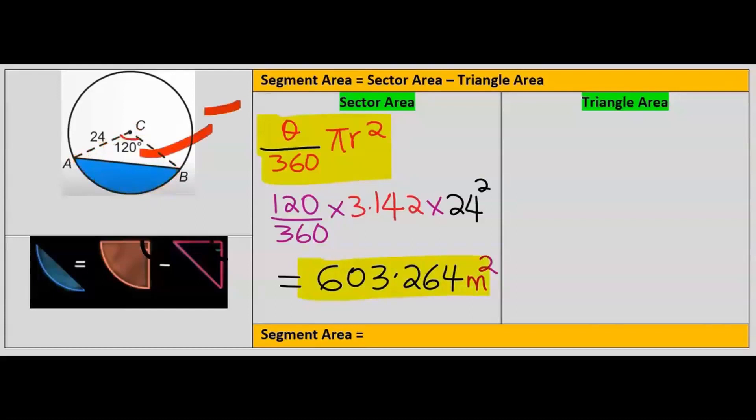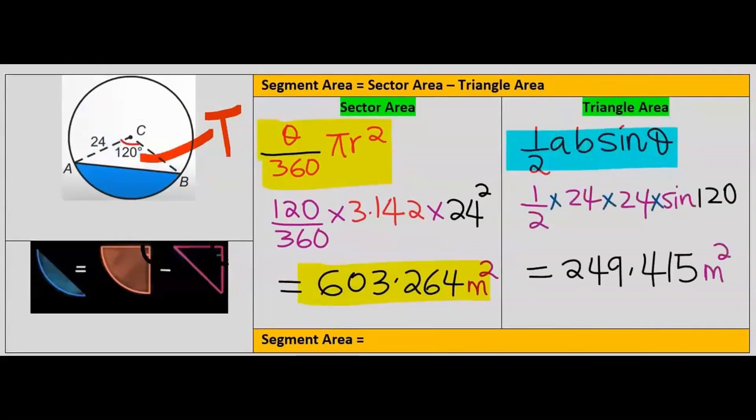Next, we are going to find the area of this triangle, which is 1 over 2 multiplied by the two sides of the radius multiplied by the central angle. Using the area of a triangle with a given angle, our answer is 249.415 meters squared.